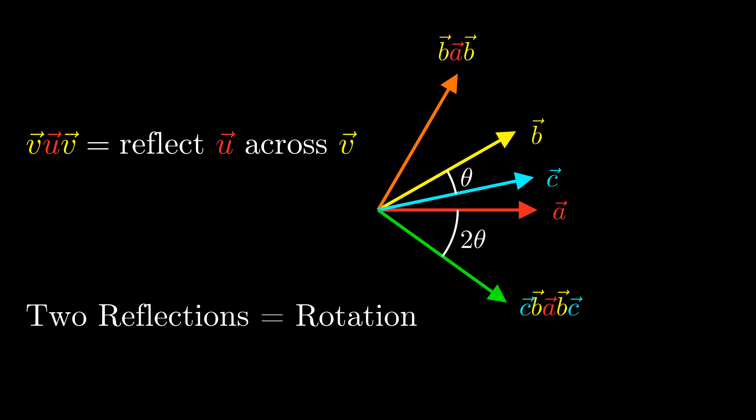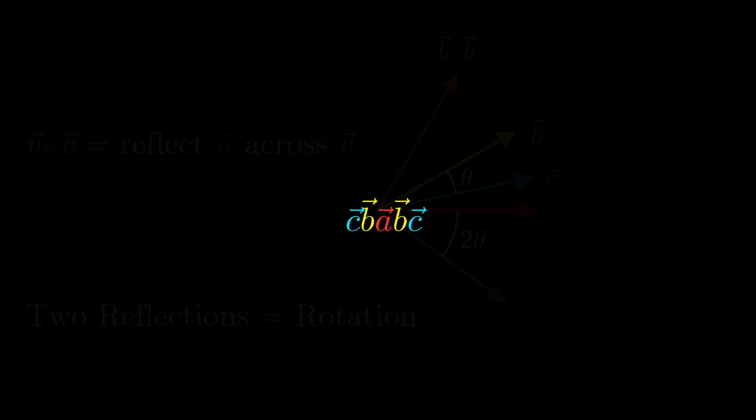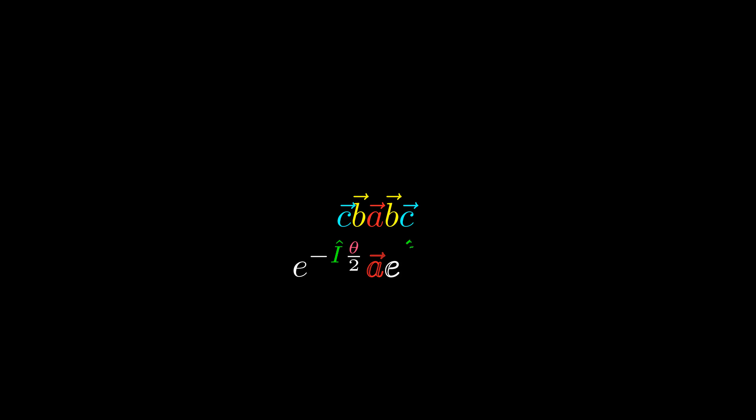We know that ABC rotates A by the angle between B and C, and multiplying by CB on the left is the same as multiplying by BC on the right, so CBABC is just ABC rotated by the angle between B and C again. Thus we see that two reflections is just a rotation. More precisely, reflecting a vector through B and then through C is the same as rotating by twice the angle between B and C.